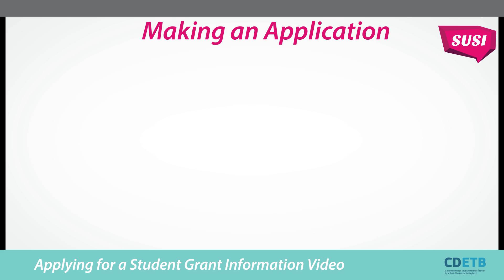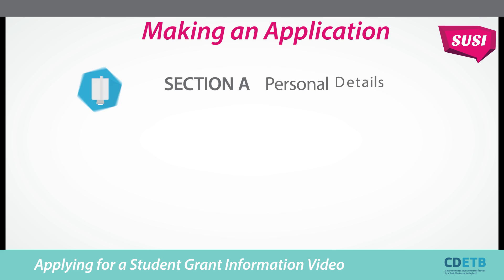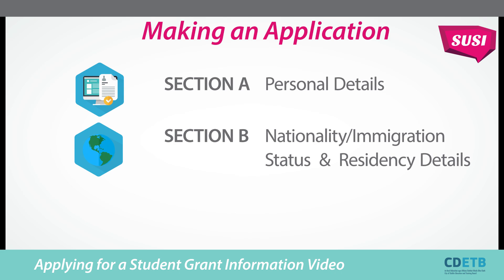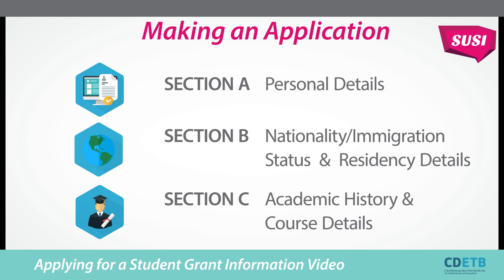Making an application. The application form has six sections which you must complete. The sections are: Section A, personal details; Section B, nationality or immigration status and residency details; Section C, academic history and course details.